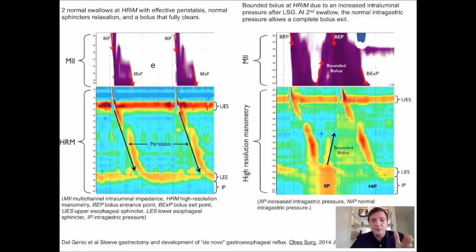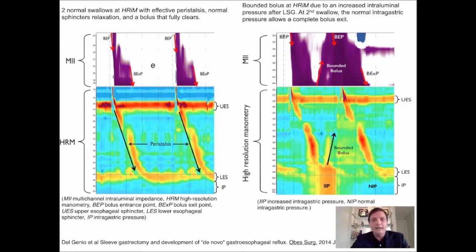You can see here in between the two bars the swallowing — the peristalsis of the patient. And very important, very easy to see on that graph, is that below the lower bar the stomach is blue, meaning a very low pressure system.